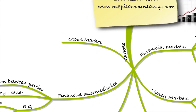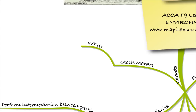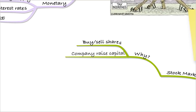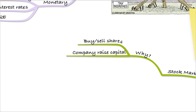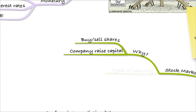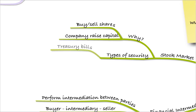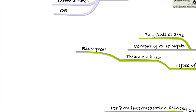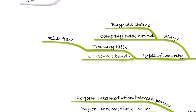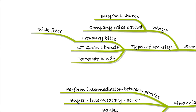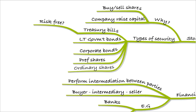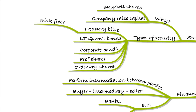Finally, a refresh on the stock market. Why do we have it? First, to buy or sell shares, and also for companies to raise capital — remember the primary and secondary functions. The types of security you'll become familiar with include: treasury bills, which are potentially risk-free government debt; long-term government bonds; corporate bonds raised by firms wanting to raise debt finance; preference shares; and ordinary shares. All of these are types of security we'll meet throughout the F9 course.